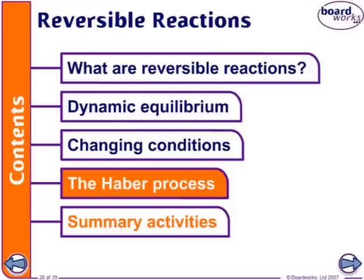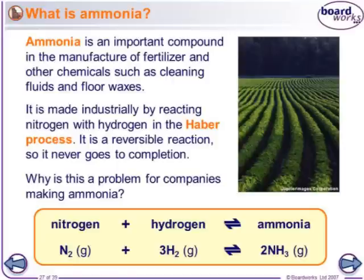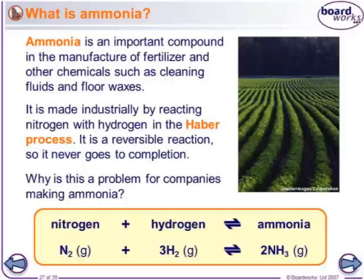Now we're going to talk about the Haber process. Ammonia is a hugely important chemical, used for everything from cleaning fluids to floor waxes and fertiliser. It was discovered by Fritz Haber and is named the Haber process. It's a reversible reaction — nitrogen, which is not very reactive, reacts with hydrogen to make ammonia, but the arrow is reversible.